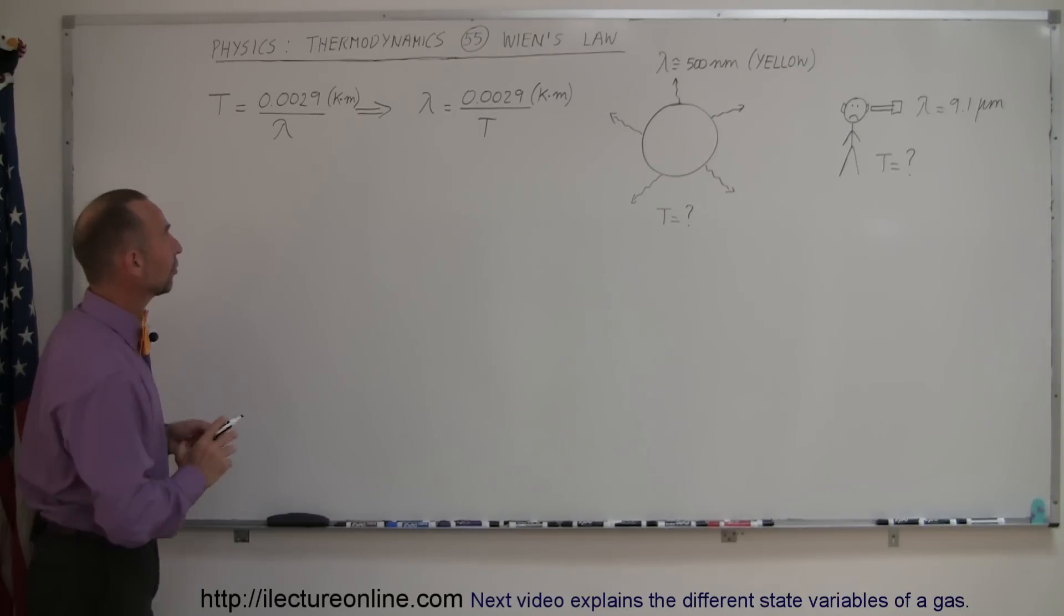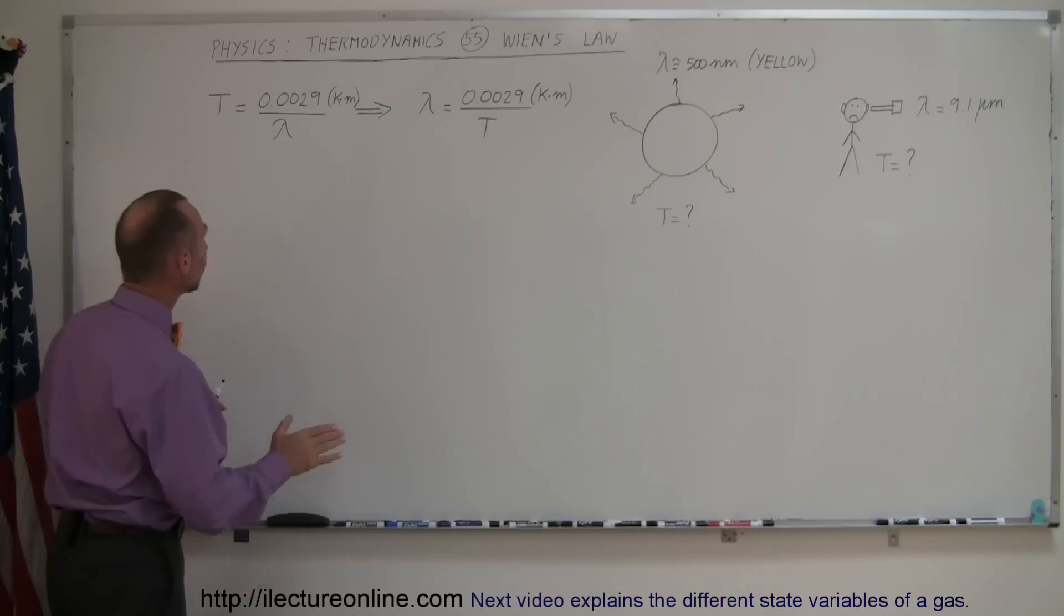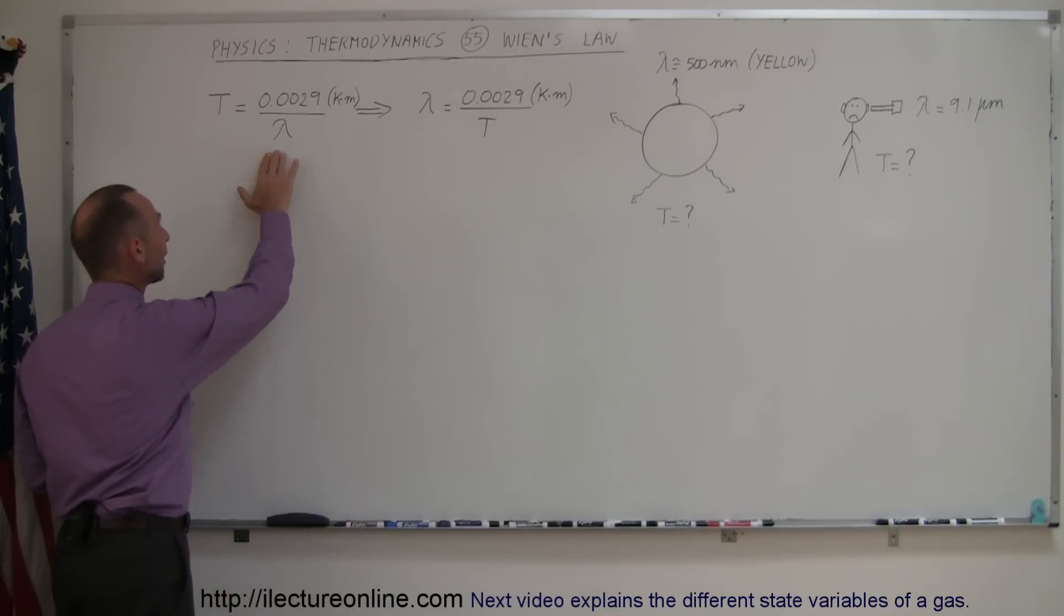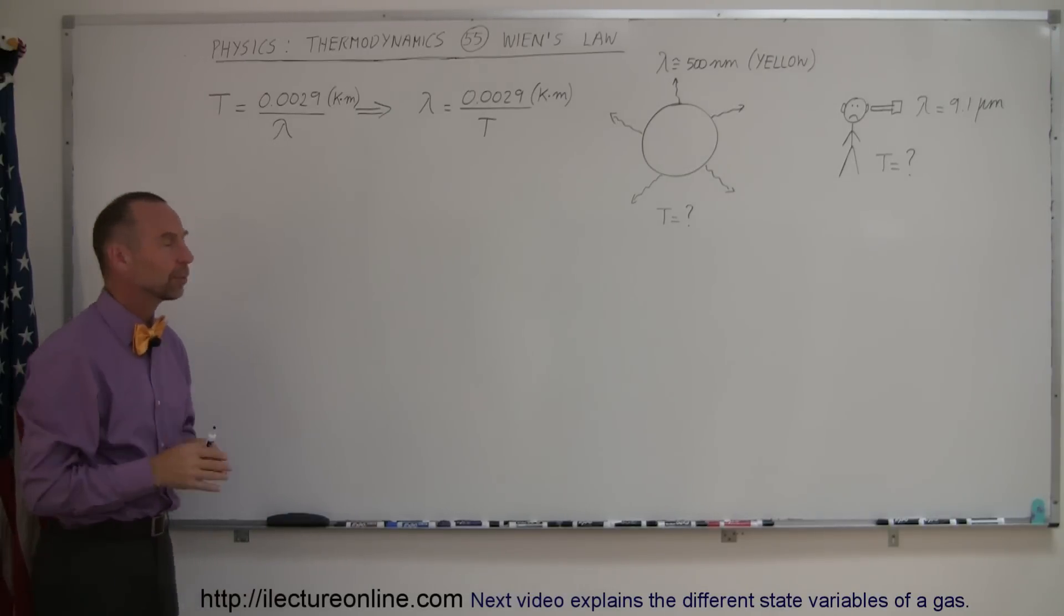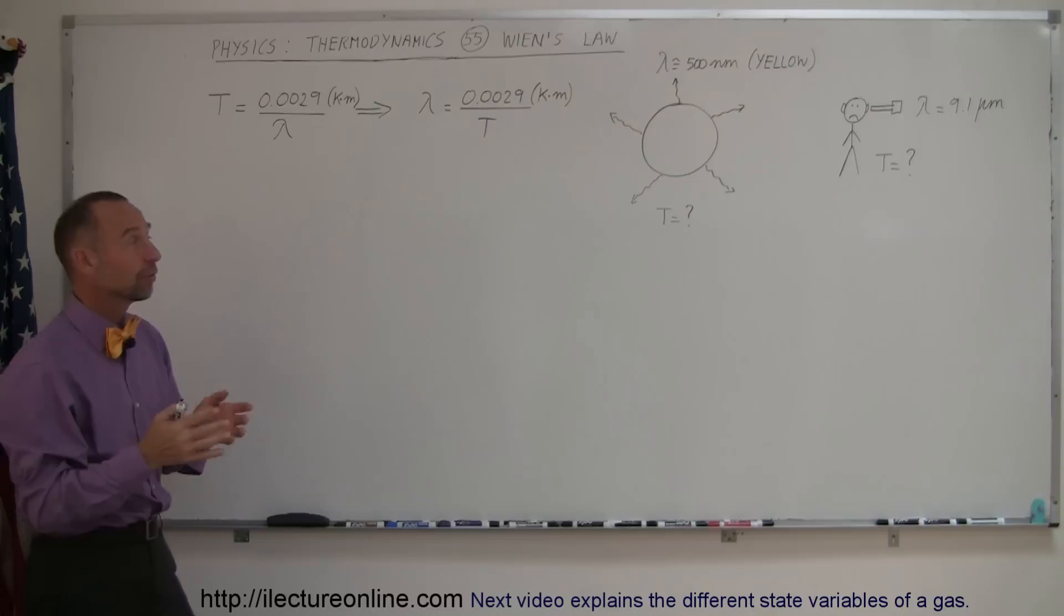Wien is a physicist who found the relationship between temperature and wavelength. Now when we talk about wavelength we talk about the wavelength of the radiation of an object.